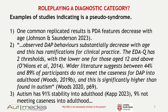One of the most replicated results in the PDA literature is that as a person matures and ages, PDA features seem to decrease with age. Stuart et al. assert that PDA features substantially decrease with age and that this has ramifications for clinical practice. The EDAQ has two thresholds, with the lower one for those aged 12 and above. Literature suggests that between 44% and 89% of participants do not meet the clinical threshold for PDA into adulthood, which is significantly higher than that found for autism.